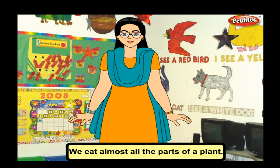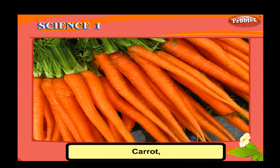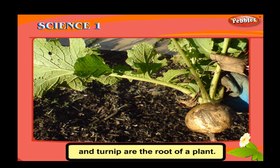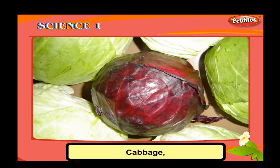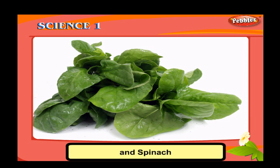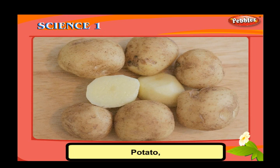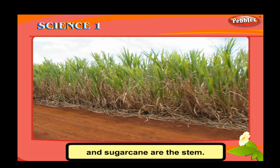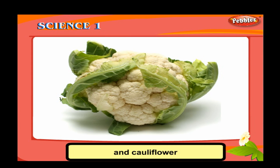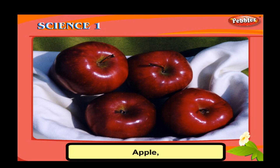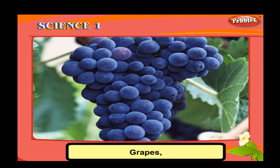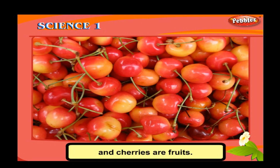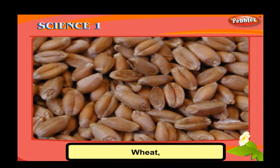Most of our food comes from plants. We eat almost all the parts of a plant. Carrot, radish, beetroot, and turnip are the roots of a plant. Cabbage, lettuce, and spinach are leaves of a plant. Potato, ginger, and sugarcane are the stem. Broccoli and cauliflower are the flower of a plant. Apple, grapes, orange, mango, banana, and cherries are fruits.